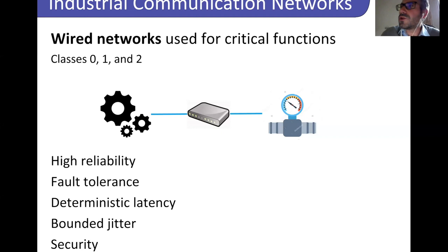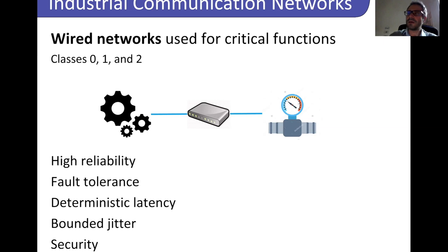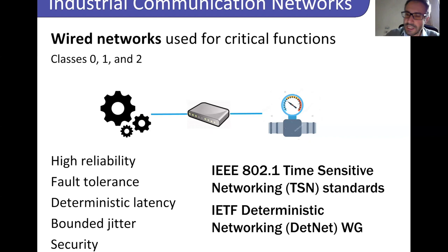These requirements significantly affect the choice of communication system. For industrial environments, you have two options: wired technology or wireless technology. Wired networks are used for critical functions — classes 0, 1, and 2 — because they provide high reliability, fault tolerance, and bounded deterministic latency. Examples include technologies from the IEEE 802.1 TSN (Time Sensitive Networking) working group and the Deterministic Networking working group (DetNet) at IETF.